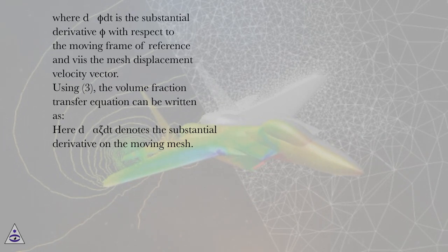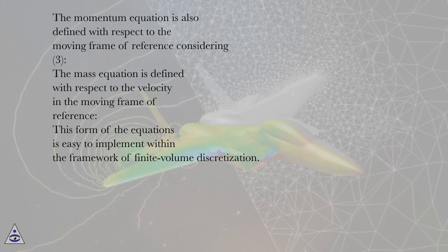here d asterisk alpha_zi dt denotes the substantial derivative on the moving mesh. The momentum equation is also defined with respect to the moving frame of reference. The mass equation is defined with respect to the velocity in the moving frame of reference.